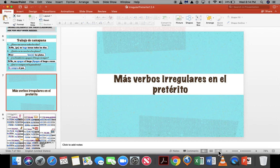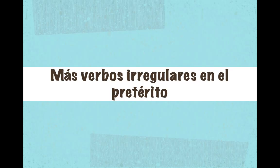More verbs in the preterite. If you remember, so far we've learned how to conjugate regular preterite verbs with -ar, -er, -ir endings — yo, tú, él, nosotros, vosotros, ellos. Then we learned how to conjugate the irregular verbs: yo dije, tú dijiste, él dijo, nosotros dijimos, vosotros dijisteis, ellos dijeron.